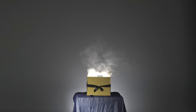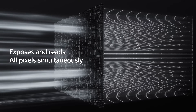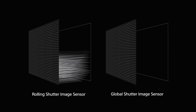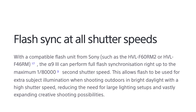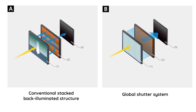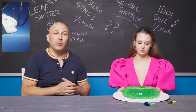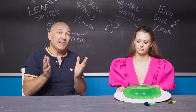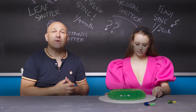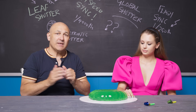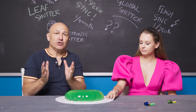Along came the Sony a93 — a stills camera with something called a global shutter. A camera with enough processing power that it could turn the whole sensor on and off, from speeds lasting minutes right up to a staggering 1/80,000th of a second. And because the whole sensor is going on and off as one, the whole image is recorded as one. No more wobbly lines, no more slits of light, less banding from high frequency flickering lights, plus the ability to choose any flash sync speed you like.